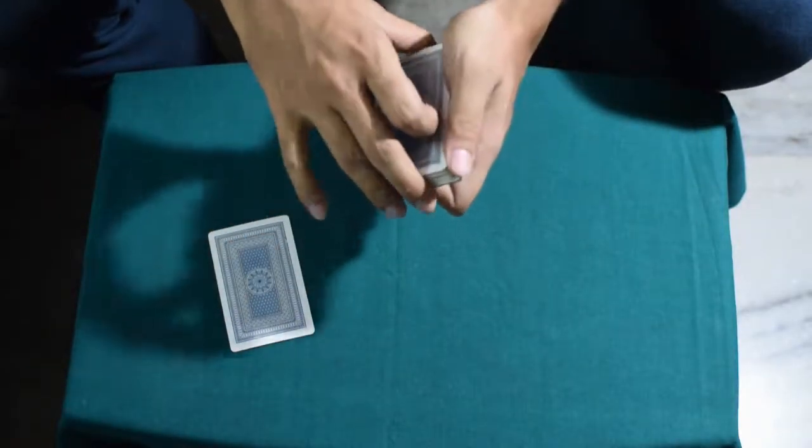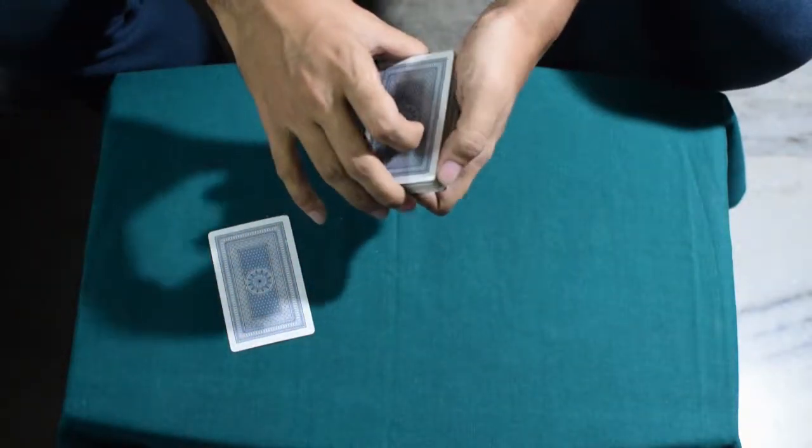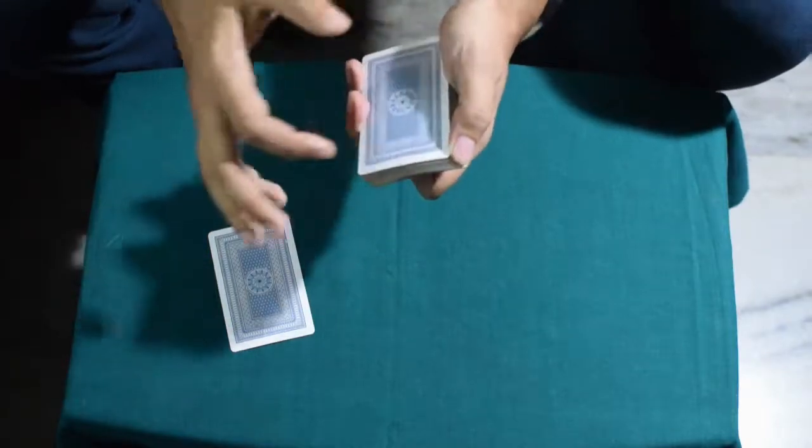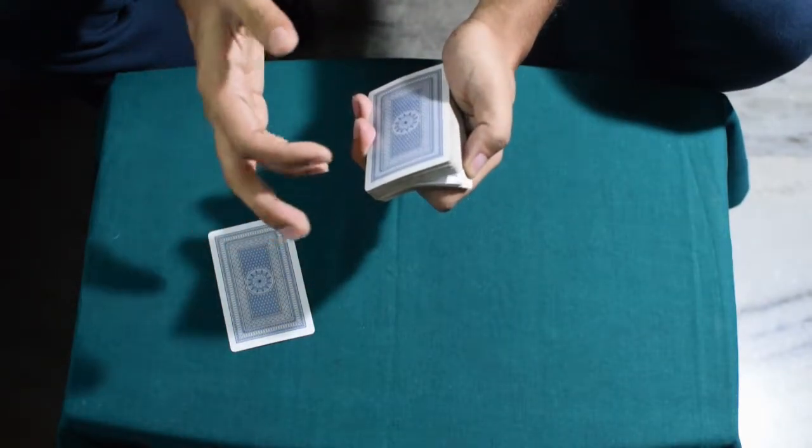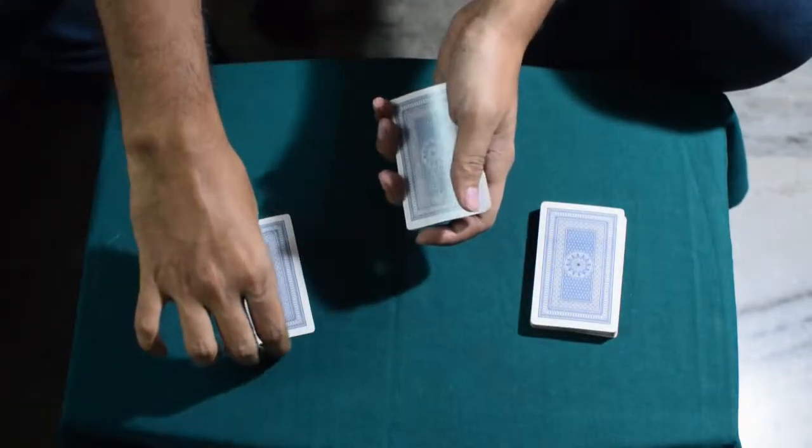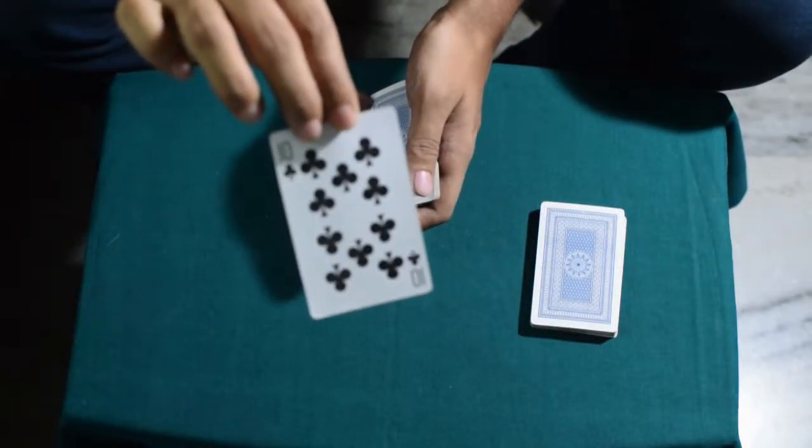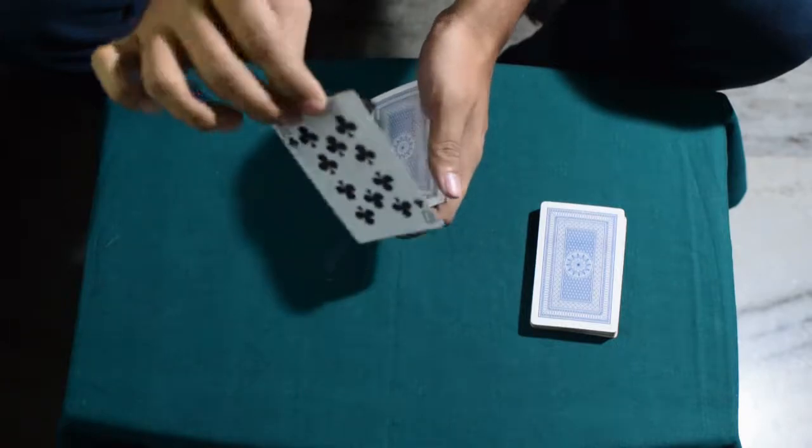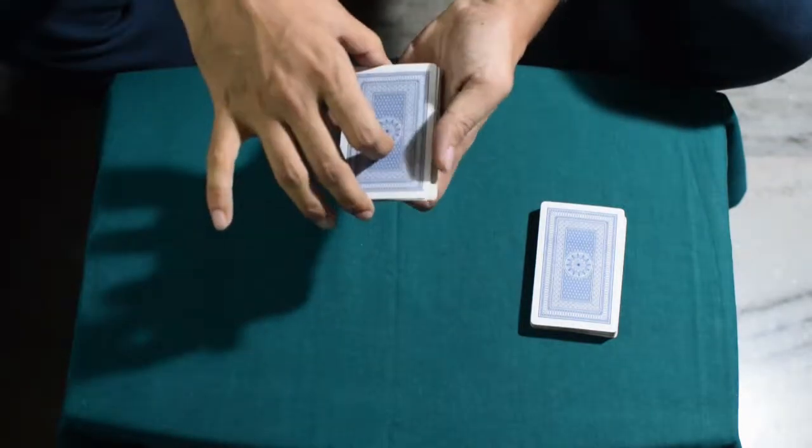And then I ask the spectator to say stop whenever they like, and I riffle through the cards. Let's say they said stop here. I ask the spectator to have a look at the card they selected. And then I place the card on top here.